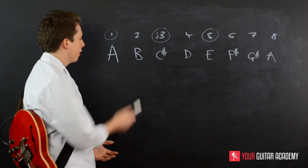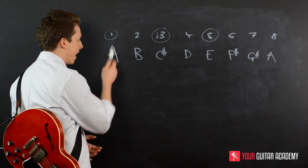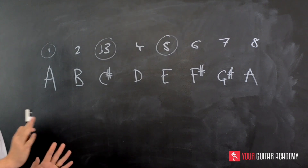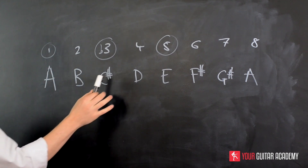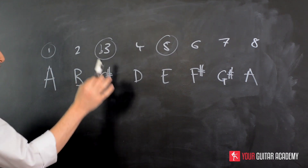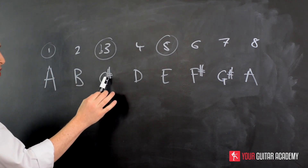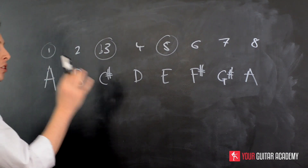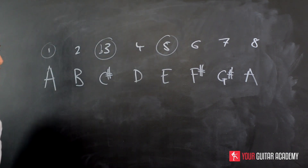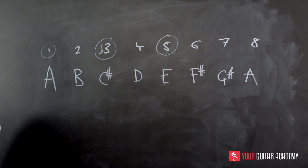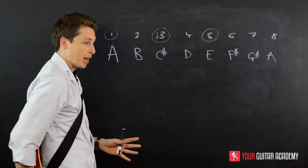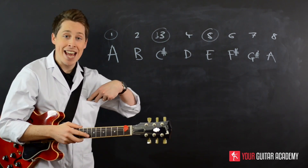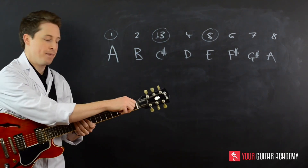That's the first part. Now, for A minor, we flatten the third. That gives us C natural — not C sharp — because C sharp flattened is C. So we've got A, C, and E. That's your first step. Your A minor chord, in theory terms, is A, C, and E.